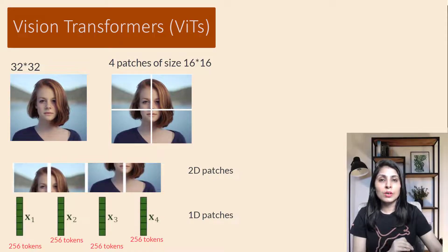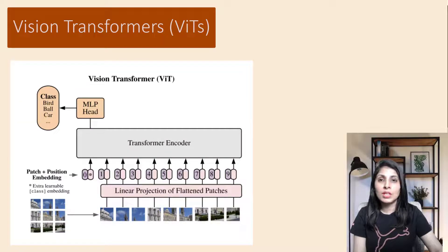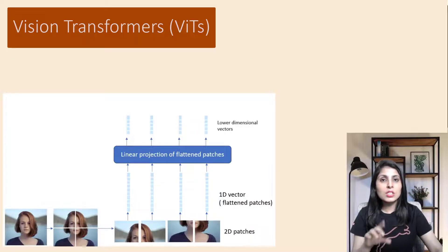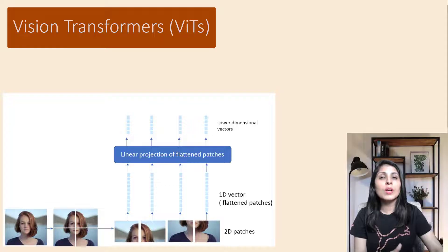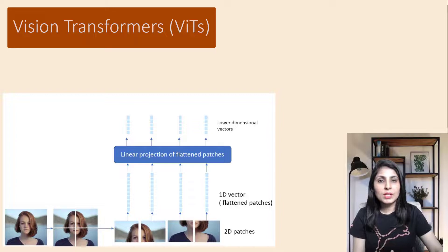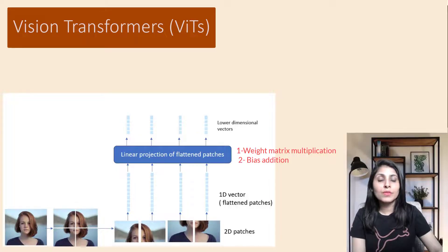After flattening, we apply a linear projection plus positional encoding, as shown in the vision transformer architecture. The linear projection works on the flattened patches by transforming each 1D vector into a lower-dimensional vector, converting it into a lower-dimensional representation while preserving relationships and important features. This involves two main steps: weight matrix multiplication and bias addition — similar to what we do in convolutional neural networks — multiplying weights with inputs and adding a bias.